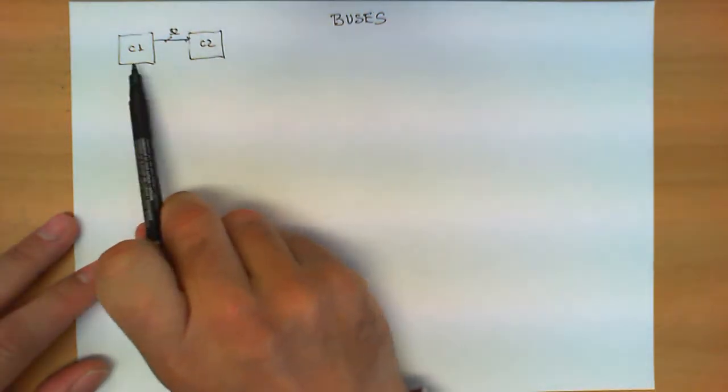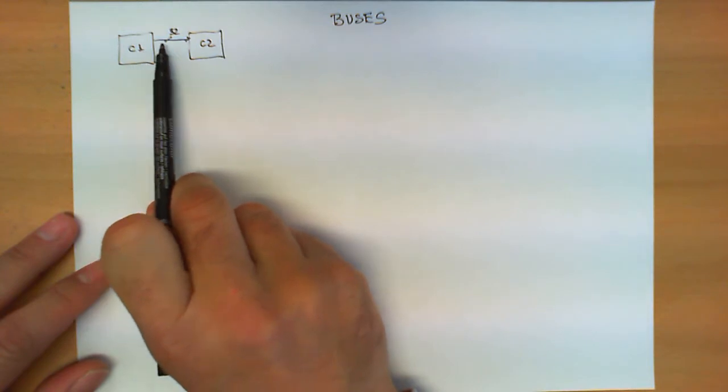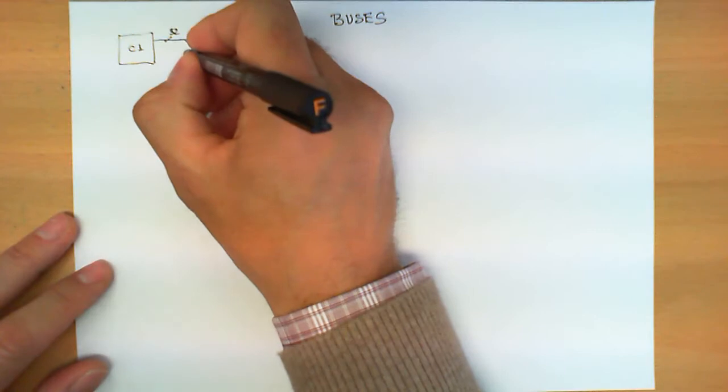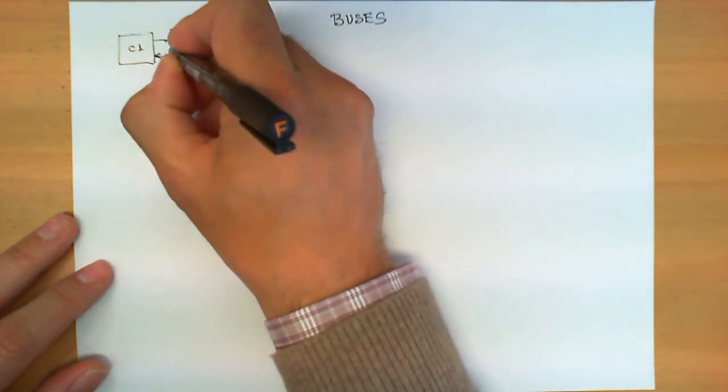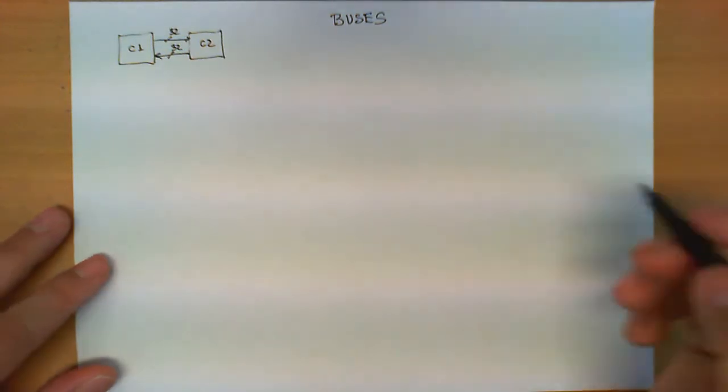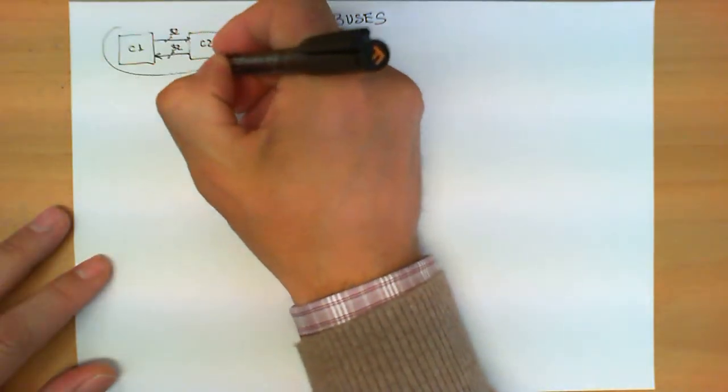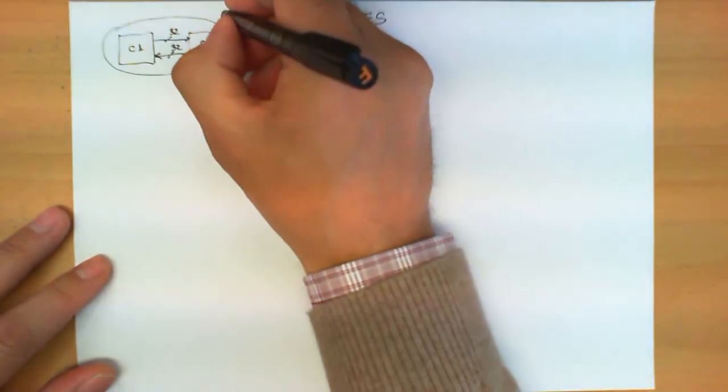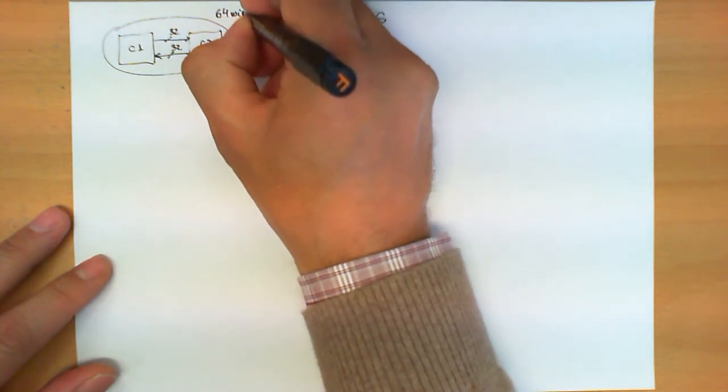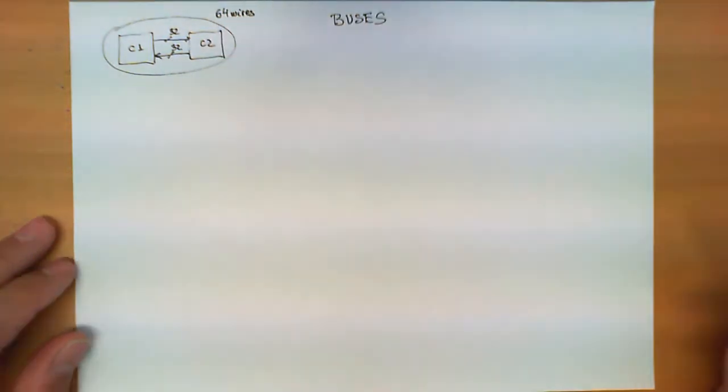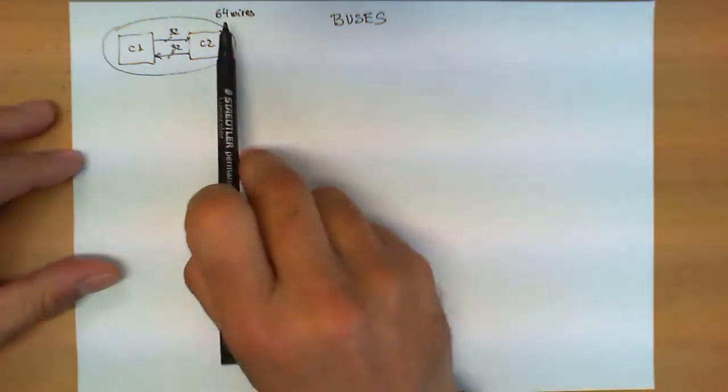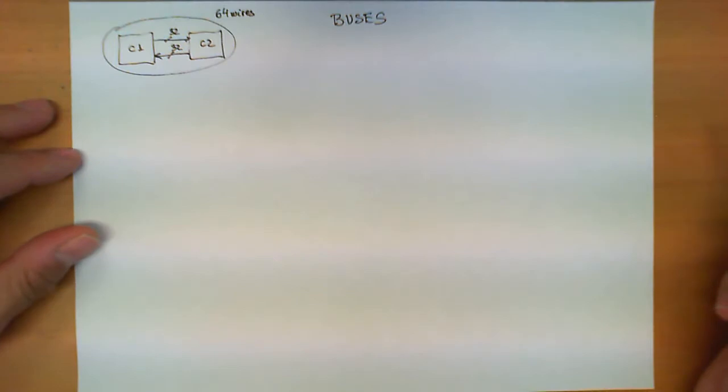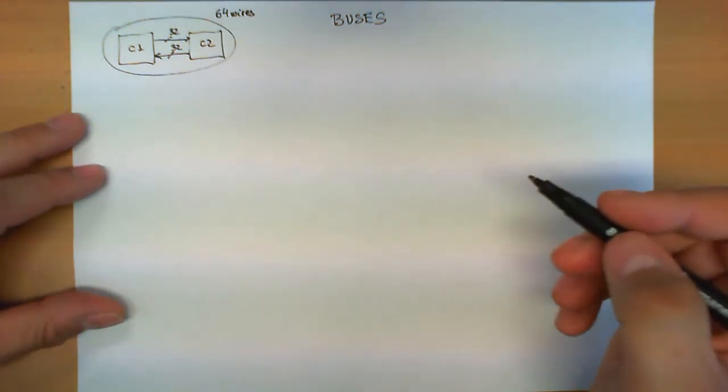What we're representing here is that circuit C1 needs to send 32 signals or 32 bits to circuit C2. But it could be the other way around, that C2 also needs to send to C1 another 32 signals. Now there is an initial solution for this problem - just use 64 wires to communicate between these two circuits. However, when the number of wires keeps increasing, this duplication can be avoided.